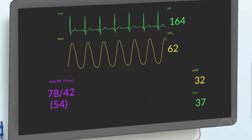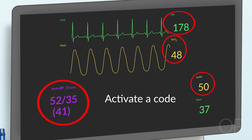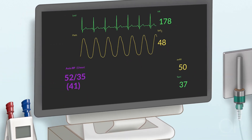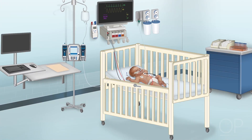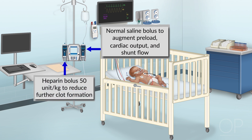As you are waiting for your fellow to arrive in the room, the vital signs change to a heart rate of 178, oxygen saturation of 48%, respiratory rate of 50, and blood pressure of 52 over 35. If you have not already, activate a code to get additional nursing and physician resources into the room for help. In the setting of likely shunt thrombosis with worsening desaturation despite oxygen therapy and decreasing pulse pressure, you should anticipate the following interventions: ask the nursing staff to prepare a normal saline bolus to augment preload, cardiac output, and any shunt flow possible, as well as a heparin bolus of 50 units per kilo to decrease further formation of clot. The situation can rapidly deteriorate, and should the patient lose pulses, HALS should be initiated and the cardiac surgical team should be called immediately to proceed with re-exploration of the surgical site and ECMO cannulation.